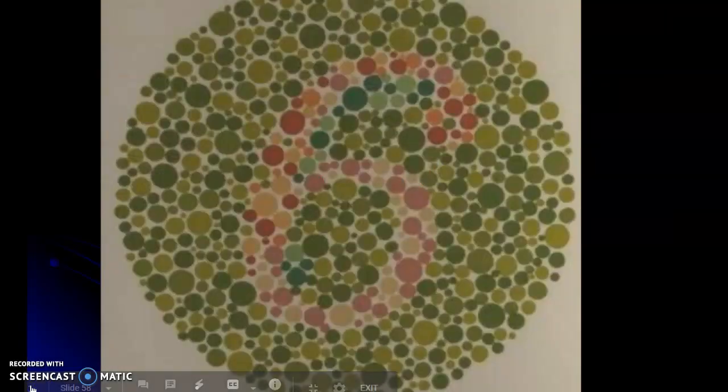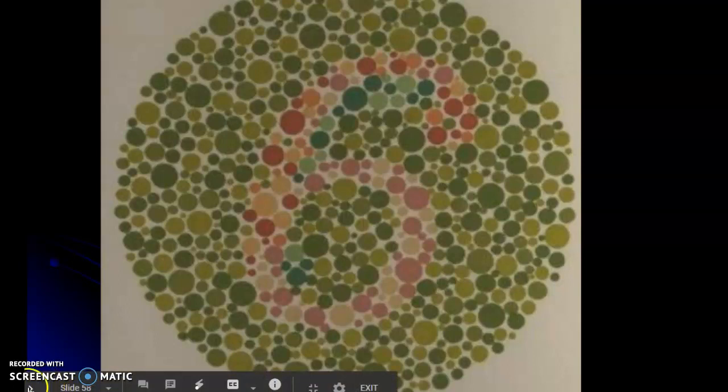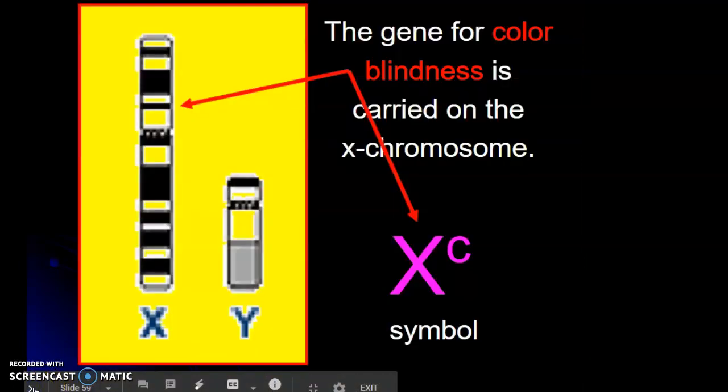A colorblindness test would look something like this. It's usually some sort of green and red variation. You might see it the other way around where the number is green and the background is red. But it's the same sort of thing. So everybody should be seeing the number six in this particular spot.